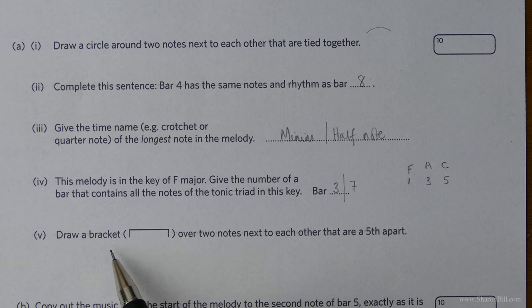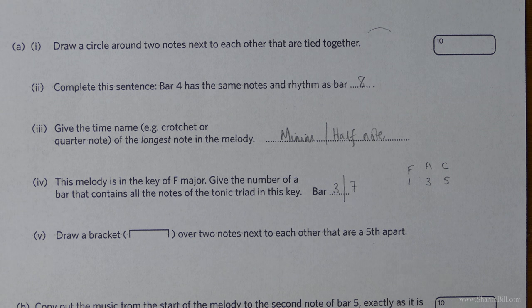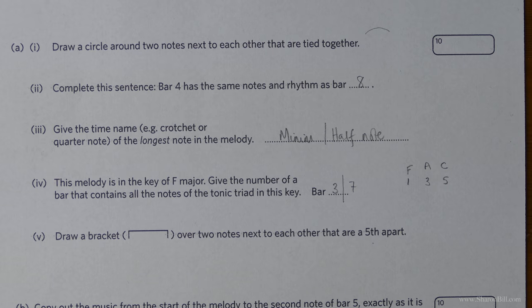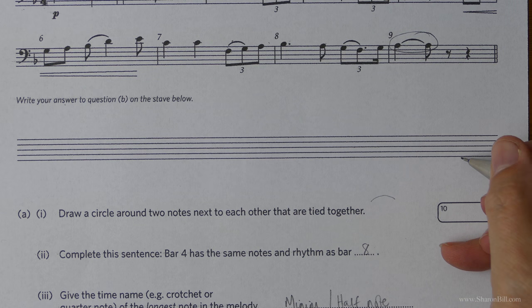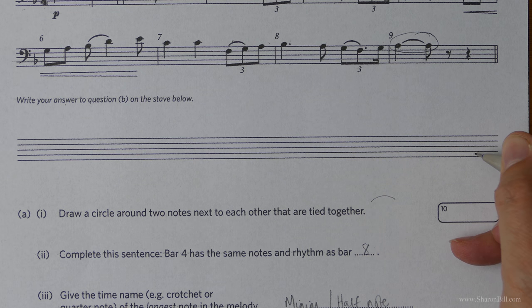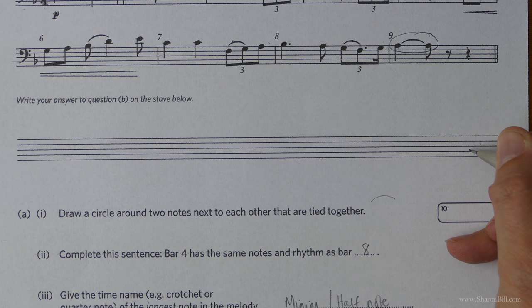So now we're looking for the interval of a fifth. We've got to draw a bracket over two notes next to each other that are a fifth apart. Now you're not exactly looking for a needle in the haystack. When you're looking for a fifth it tends to go, well it does go first, third, fifth, line, line, line or first, third, fifth, space, space, space. So you're looking for a space skipping to the next but one space or a line skipping to the next door but one line.